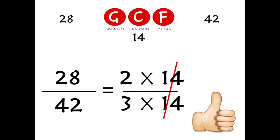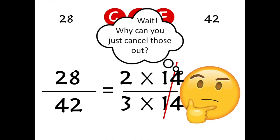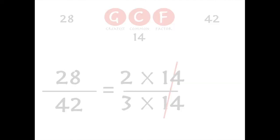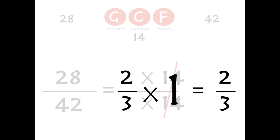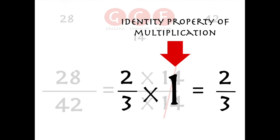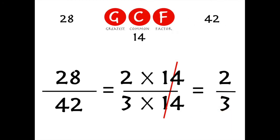Now we can just cancel out the 14s. Why can you cancel those out? Good question. Let's look at just the 14s for a second — 14 divided by 14, or anything divided by itself, is just 1. And if we take 2/3 and multiply it times 1, we just get 2/3 again, because any number times 1 is just that same number — it's called the identity property of multiplication. If we cancel out the 14s, that means our big hairy fraction has just been made so much more simple.